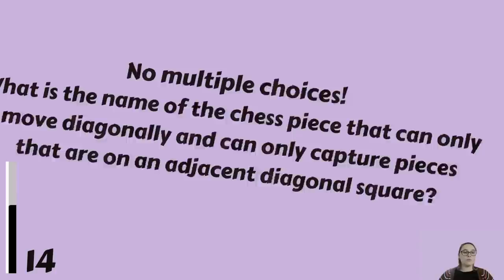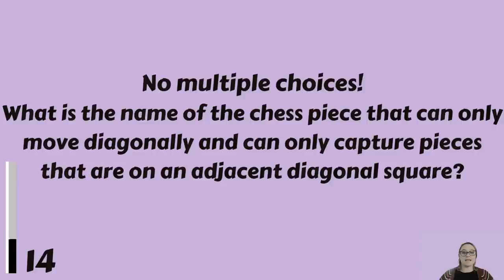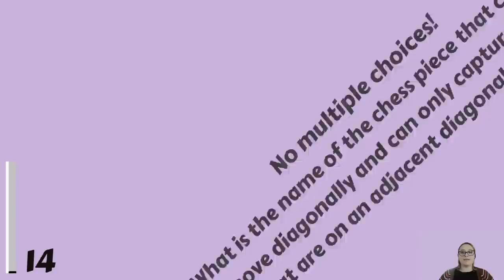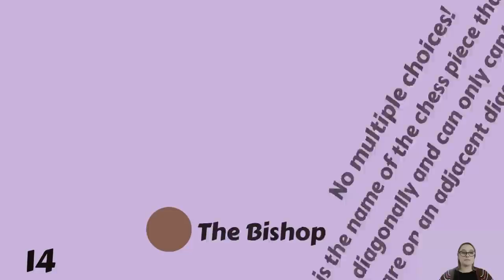What is the name of the chess piece that can only move diagonally and can only capture pieces that are on an adjacent diagonal square? That is the Bishop.